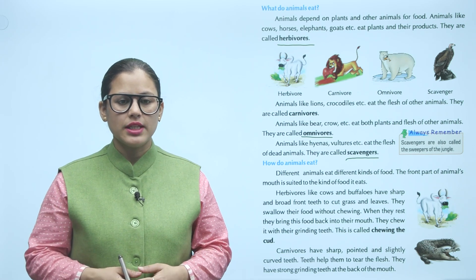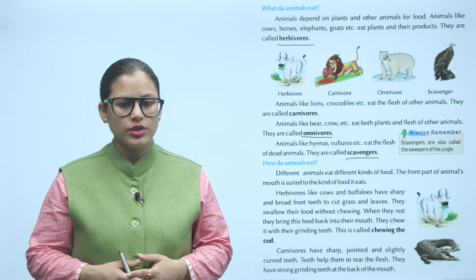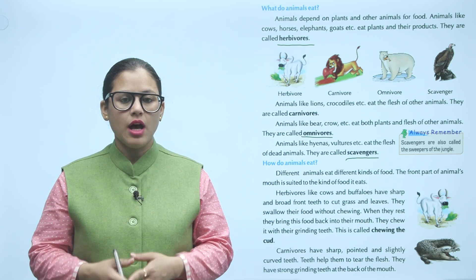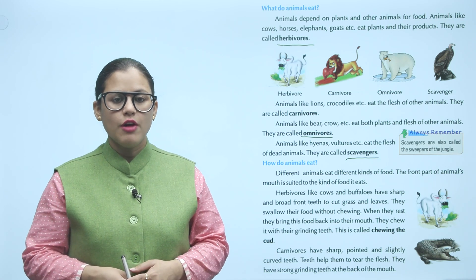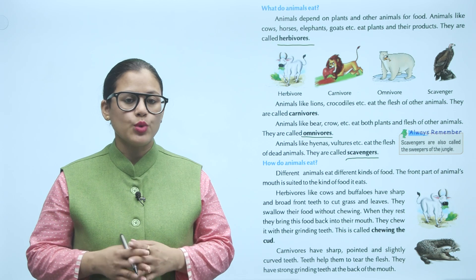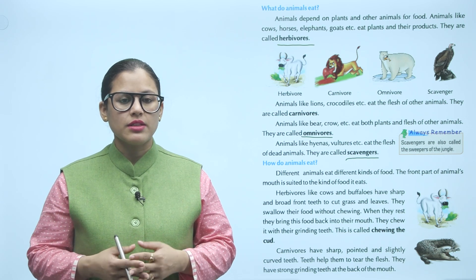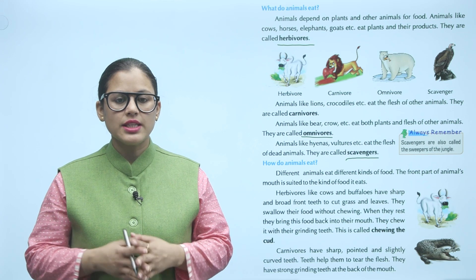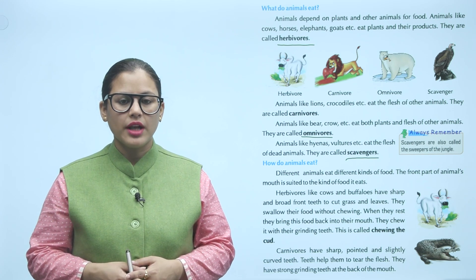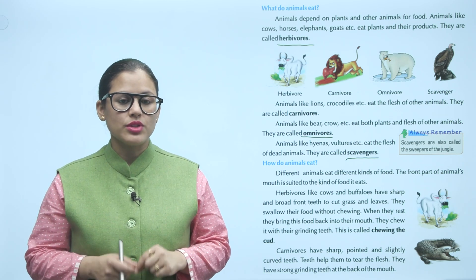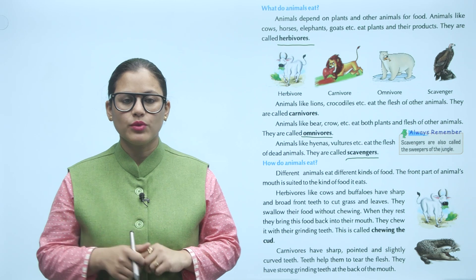How do animals eat? Different animals eat different kinds of food. The front part of animals mouth is suited to the kind of food it eats. Herbivores like cows and buffaloes have sharp and broad front teeth to cut grass and leaves. They swallow their food without chewing. When they rest they bring this food back into their mouth. They chew it with the grinding teeth. This is called chewing the curd. Carnivores have sharp, pointed and slightly curved teeth. Teeth help them to tear the flesh. They have strong grinding teeth at the back of the mouth.